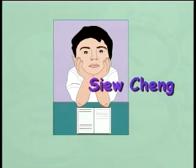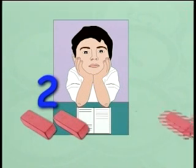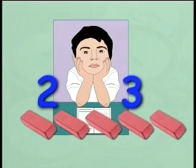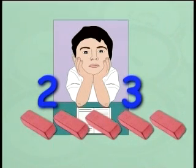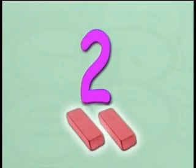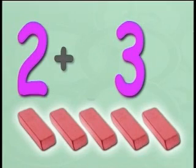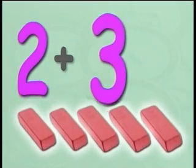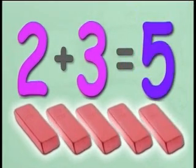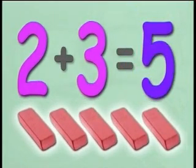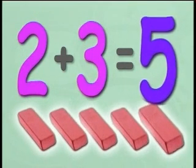Siu Ching has two erasers. His brother gives him three more erasers. What is the total number of erasers Siu Ching has? If Siu Ching has two erasers and his brother gives him three more, that means we add two to three, which is a total of five. Siu Ching has a total of five erasers.